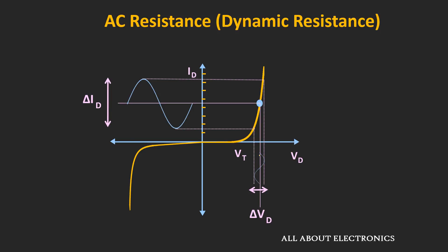On the x-axis, you can see the variation in the applied AC input signal, and correspondingly the current flowing through the diode will also change. By tracing each point for this time-varying voltage signal, we can find the corresponding time-varying current signal. The applied voltage will change in a certain band, and the corresponding current will also change in a certain band — so the resistance value changes continuously. The AC resistance can be found by drawing a line tangent to the Q-point; the slope of this line gives the AC resistance.